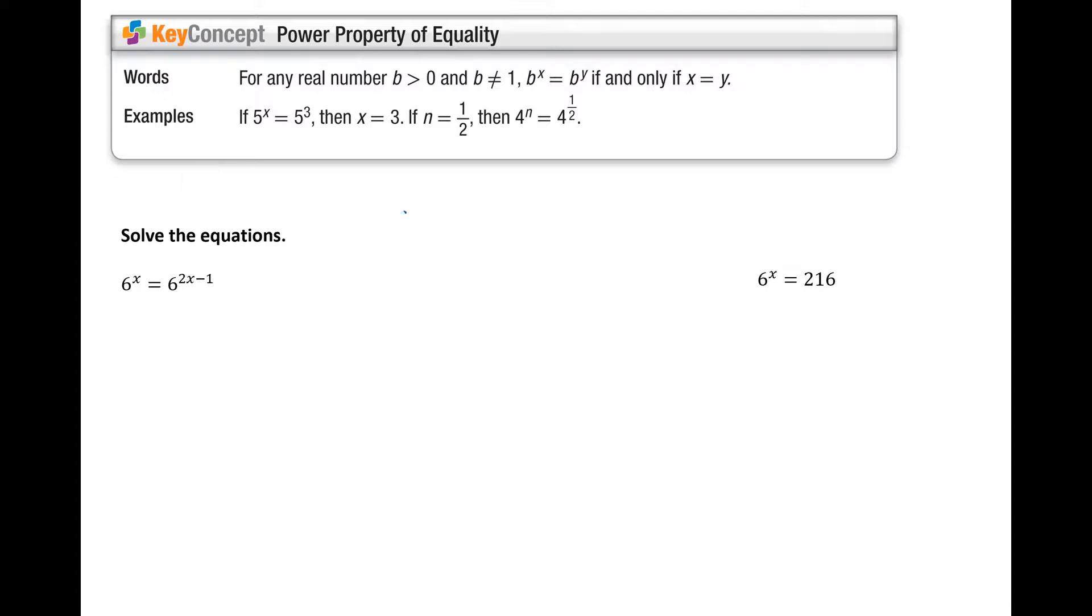So if I have an equation with the same base on both sides and it equals each other, so let's say 5 to the x power is equal to 5 to the third power. Well, my bases are the same, so the only way for this equation to make sense, 5 to what power is equal to 5 to the third power? Well, I know my exponent has to be the same, because 5 to the third power is equal to 5 to the third power. There's only one value that x can be, and that's 3. So we can say if on both sides of an equation I have the same base and they are equal, I can say the exponents must be equal.